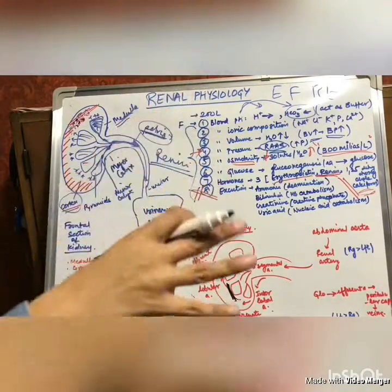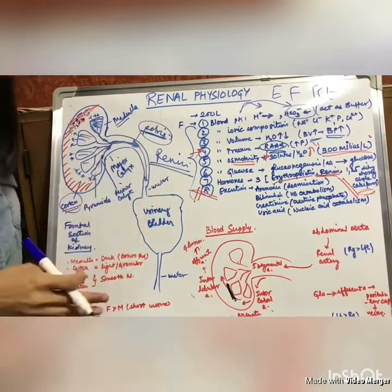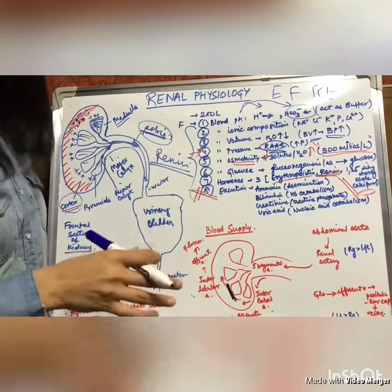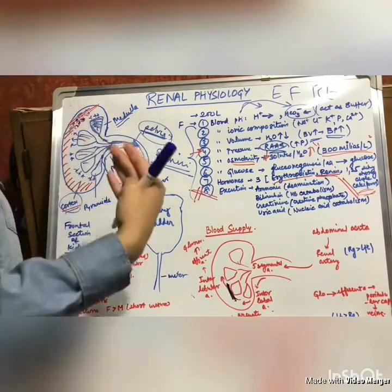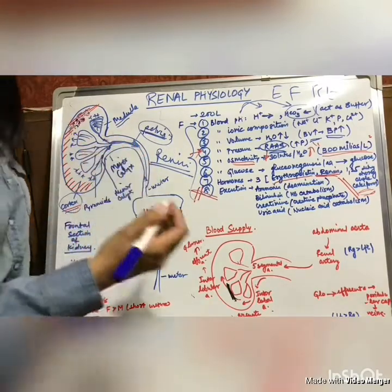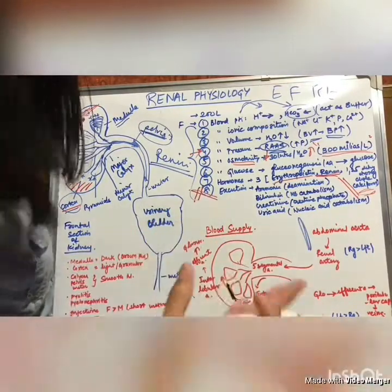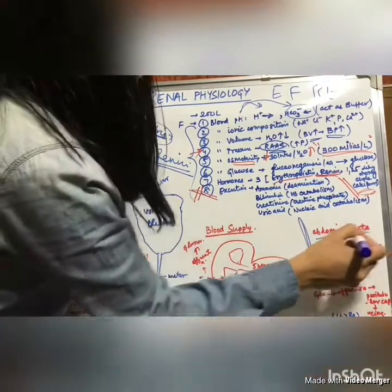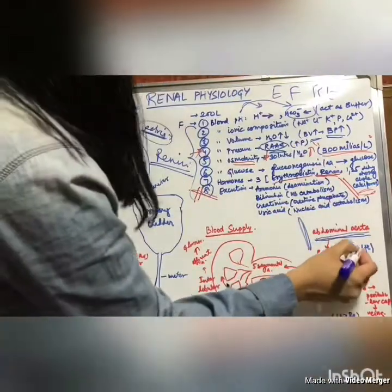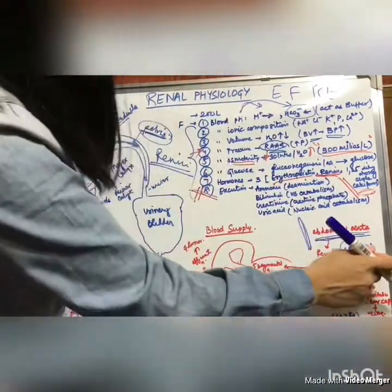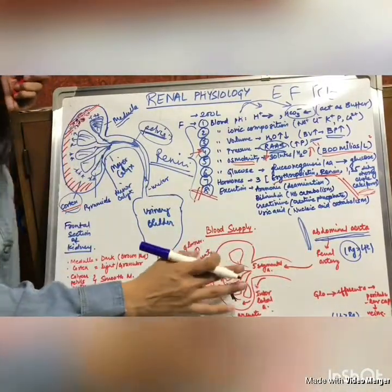The next part is blood supply of the kidney. Starting with the abdominal aorta: in a normal individual, the abdominal aorta shifts slightly from the midline towards the left side. It gives off branches called renal arteries — the main arteries supplying the kidney. Because the aorta is shifted left, the right renal artery is longer than the left renal artery.